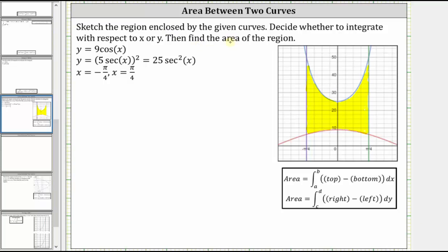We're asked to sketch the region enclosed by the given curves, decide whether to integrate with respect to x or y, then find the area of the region. We're given y equals 9 cosine x, y equals the square of 5 secant x, which is equal to 25 secant squared x, x equals negative π over 4, and x equals positive π over 4.